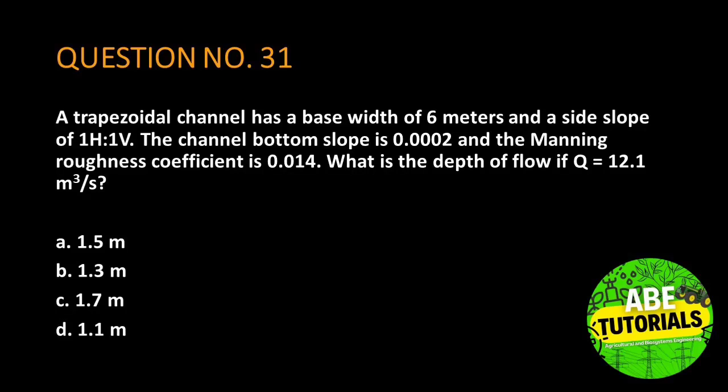Question number 31. A trapezoidal channel has a base width of 6 meters and a side slope of one horizontal to one vertical. The channel bottom slope is 0.0002 and the Manning roughness coefficient is 0.014. What is the depth of flow if discharge Q is equal to 12.1 cubic meters per second?